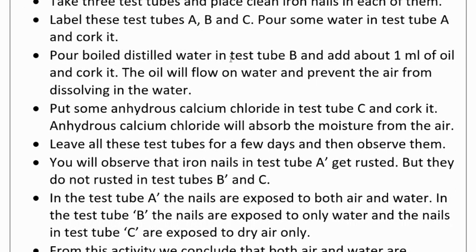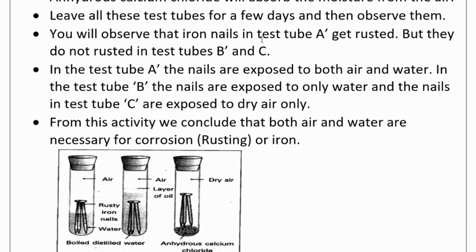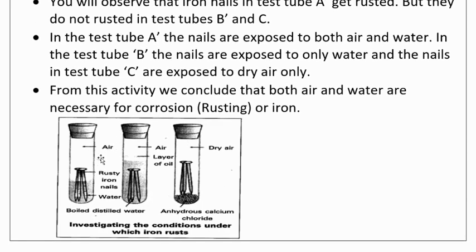Pour boiled distilled water in test tube B and add 1 ml of oil and cork it. The oil will float on water and prevent air from dissolving in the water. Put some anhydrous calcium chloride in test tube C and cork it. Leave all the test tubes for a few days and then observe them. You will observe that iron nails in test tube A get rusted but they do not rust in B and C.